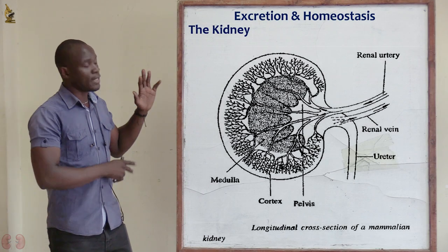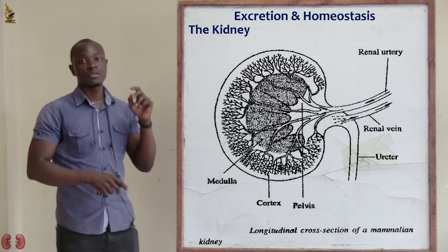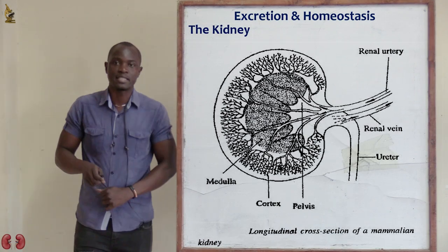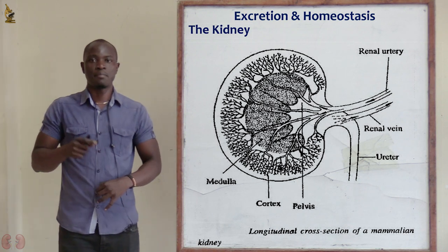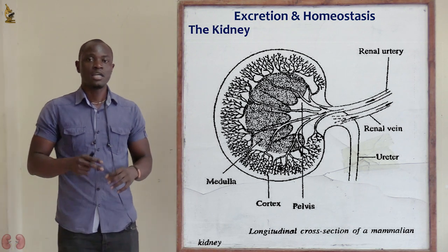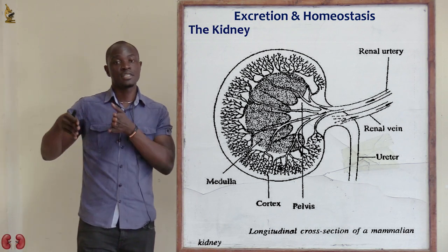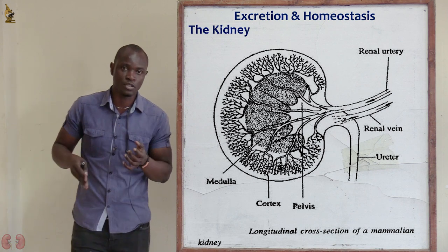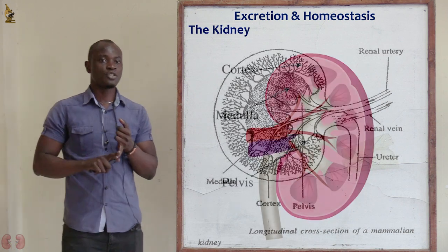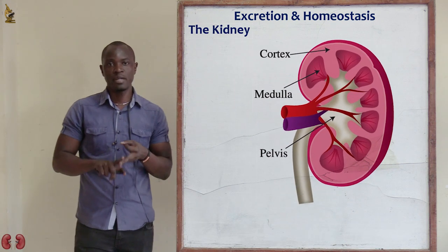If we take this kidney and look at it longitudinally, a longitudinal section of the mammalian kidney shows three main distinct regions: the cortex, the medulla, and the pelvis.